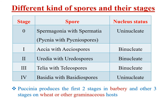There are mainly five types of spores produced in the life cycle of Puccinia. Stage 0 represents the spermogonium with spermatia, also known as pycnia with pycniospores. Stage 1 is aecia producing aeciospores. Stage 2 includes uredinia and uredospores. Stage 3 is telia with teliospores. Stage 4 is basidia with basidiospores. Among all five stages, spermogonia with spermatia and basidia with basidiospores are uninucleate, whereas aecia, uredinia, and telia are binucleate in nature.